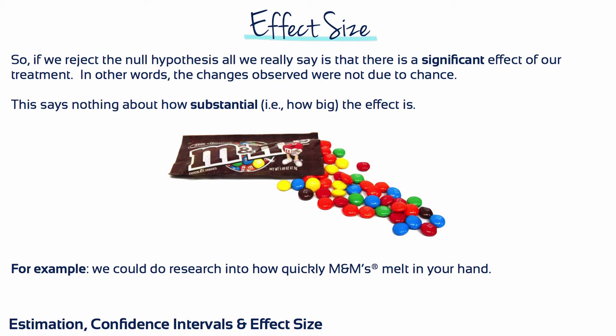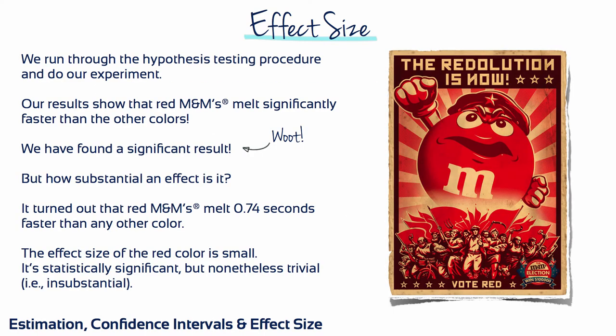For example, we could research into how quickly M&Ms melt in your hand. We run through the hypothesis testing procedure and do our experiment. Our results show that red M&Ms melt significantly faster than the other colours. But how substantial an effect is it? Let's say it turns out that red M&Ms melt 0.74 seconds faster than any other colour. The effect size of the red colour is small. It's statistically significant, but nonetheless trivial.